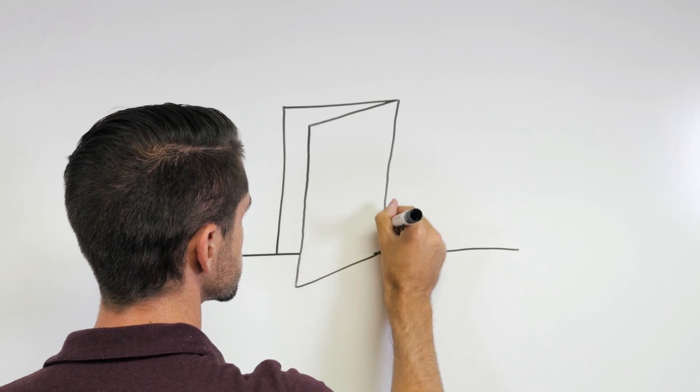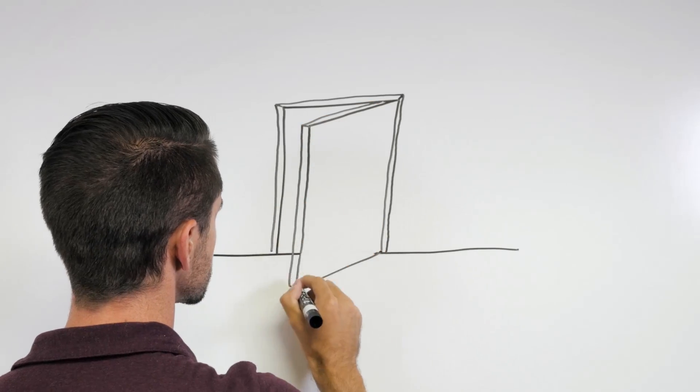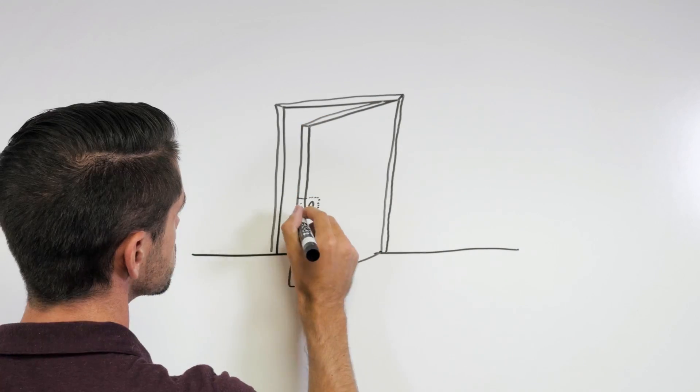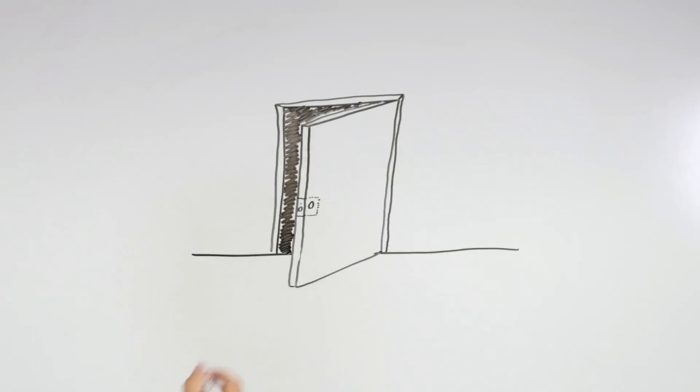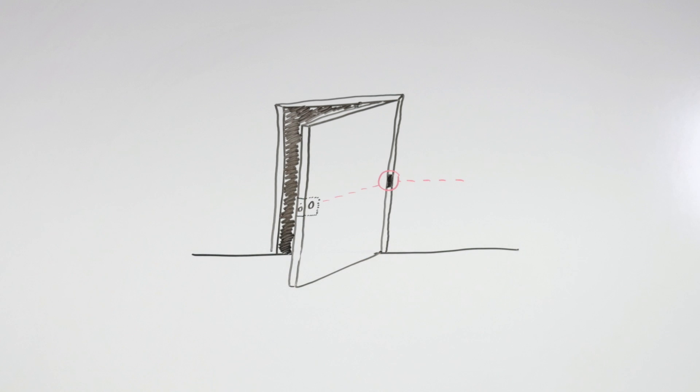You'll see electrified lock sets and trims used for everyday access control too. They do require power to be transferred from the frame to the door, usually via an electric hinge or pivot.